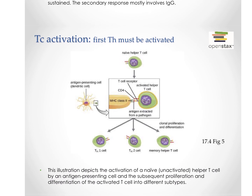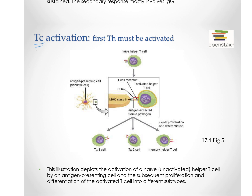The last big thing we need to talk about: we talked about B cell activation, and now we want to understand T cell activation as well. Remember, B cells are part of humoral immunity — antibodies are primarily working on exogenous antigens outside of the cell. We need a response to cells that are infected inside them with some endogenous pathogen like a virus. Cytotoxic T cells are our best response to that. Since we're killing our own cells, we need to make sure that response is appropriate, so we need signals from T helper cells, and it's a better response when T helper cells are involved.